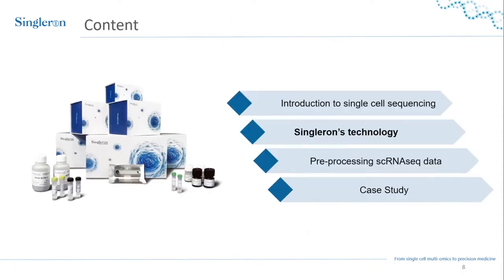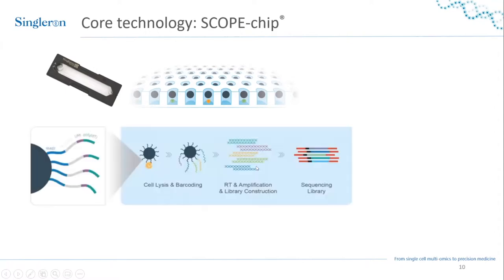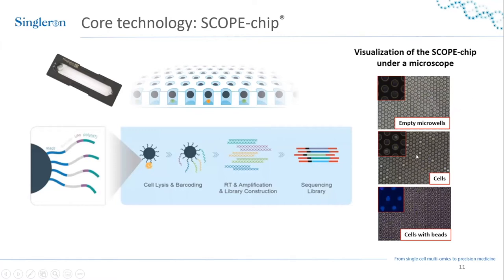I would now like to introduce you to the Single Runs technology. Our core technology is the chip, which has hundreds of thousands of wells, and the aim is to capture one cell and one bead per well. Attached to these beads are sequences containing a PCR primer, a cell barcode unique for each bead, and a UMI unique for each RNA molecule, then a poly-T tail where the poly-A of the mRNA molecule can bind. You can visualize the loading process under the microscope: first empty microwells, then cells are loaded, and finally the beads are added.